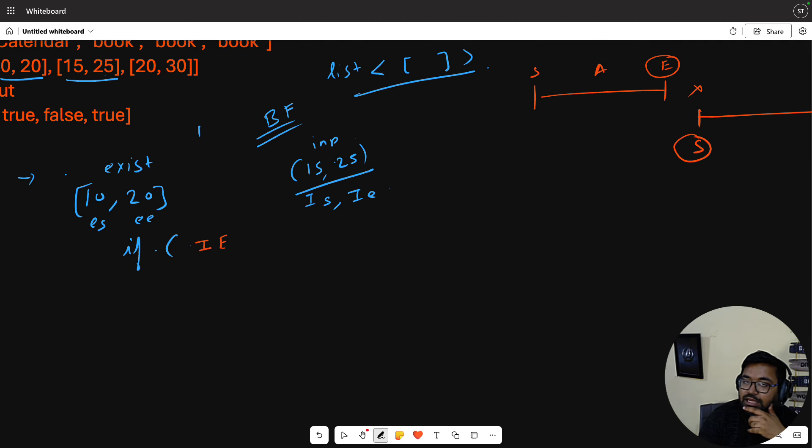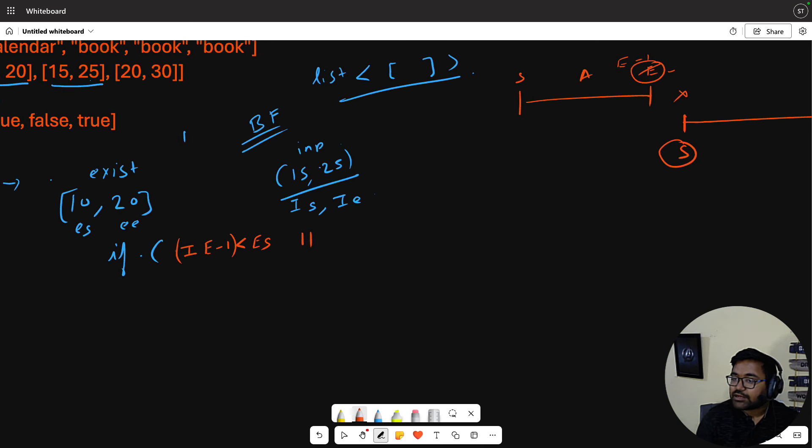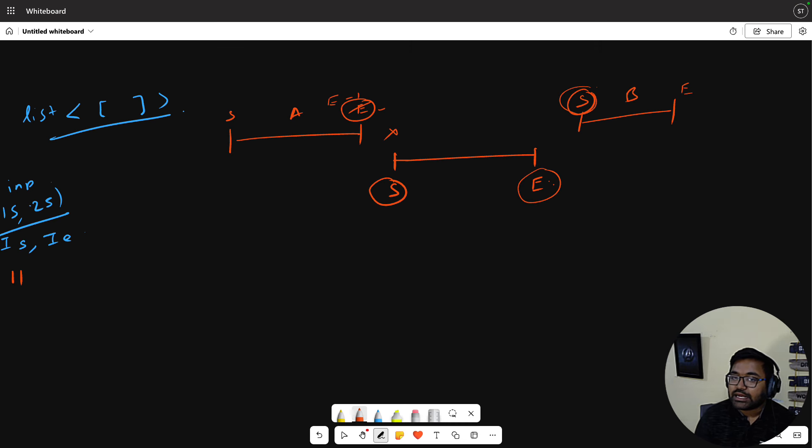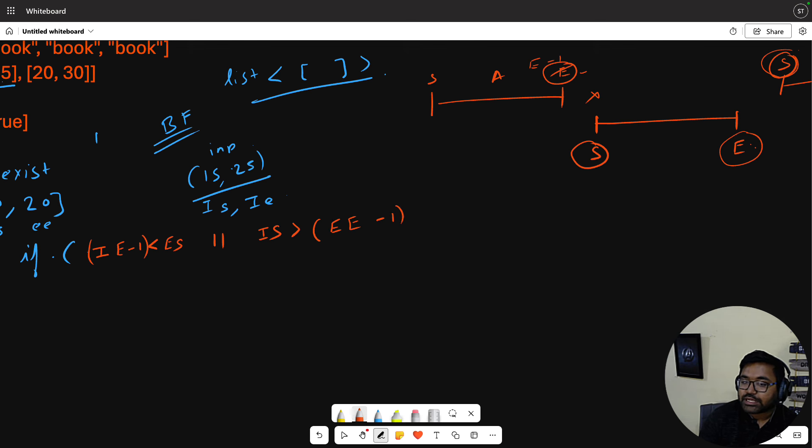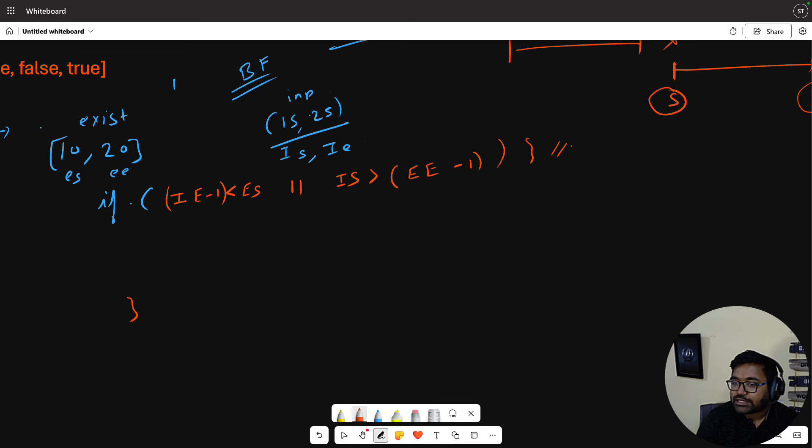When there is no overlap, input ending is actually less than existing starting, but the ending is exclusive so actually e-1, so you can write this as i-1 is less than existing starting. The other case: starting is greater than existing ending minus 1. Again minus 1 to consider. In this case there is no overlap.